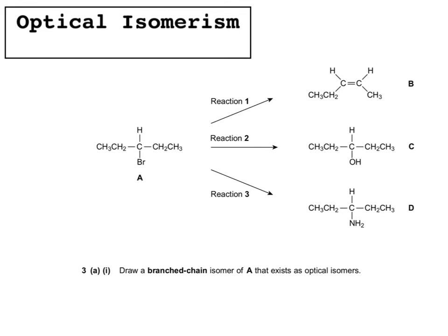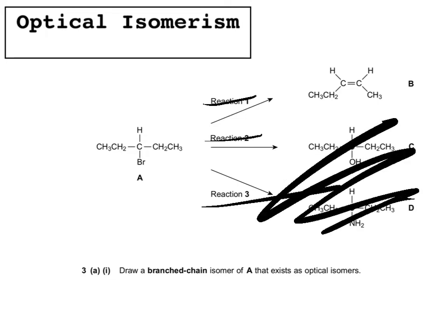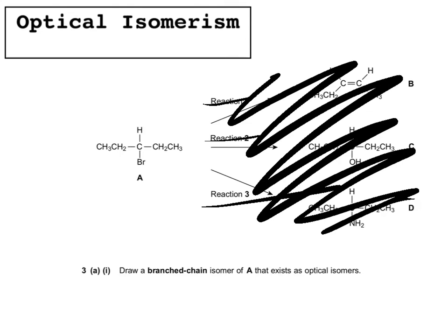Here are some past paper questions. The question asks you to draw a branched chain isomer of compound A that exists as optical isomers. There are two parts to this: first, it has to be a branched chain, meaning there won't be five carbons in the longest chain — there'll be four; and second, it must exist as optical isomers, so you just need to draw one of them, but one of the carbons must have four different groups around it.